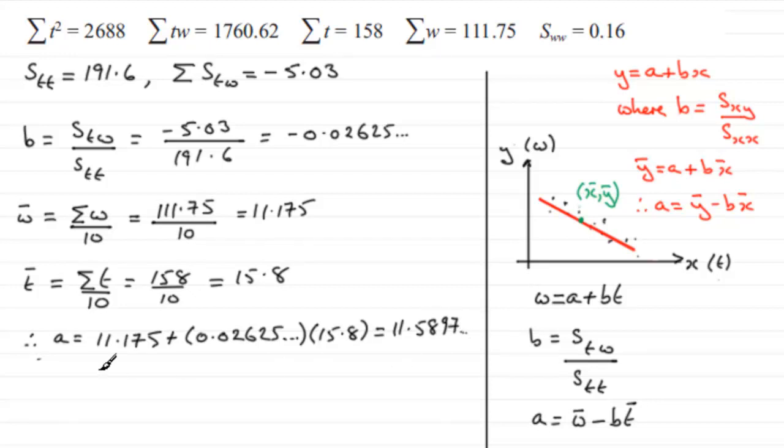Now, we're in a position to quote the regression line of w on t. So therefore, we've got the regression line, let's just give it a little intro, is, and we need to round these values up.